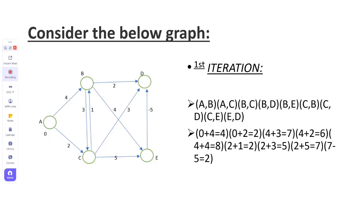Now consider a weighted graph that also contains negative weights. Bellman-Ford Algorithm is a single-source shortest path, so we will consider vertex A as the source, and the distance from source to source A is 0. We will write all the edges and check them to update the distances between all vertices.